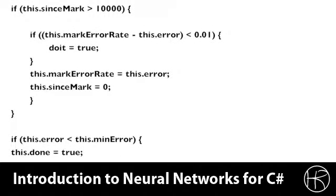If the number of iterations that we've called since the mark has been 10,000 or higher, then we need to sample the error rate. We look at the error rate and we compare it. If it's less than 1%, then we're going to set DOIT to true because we found an acceptable neural network.